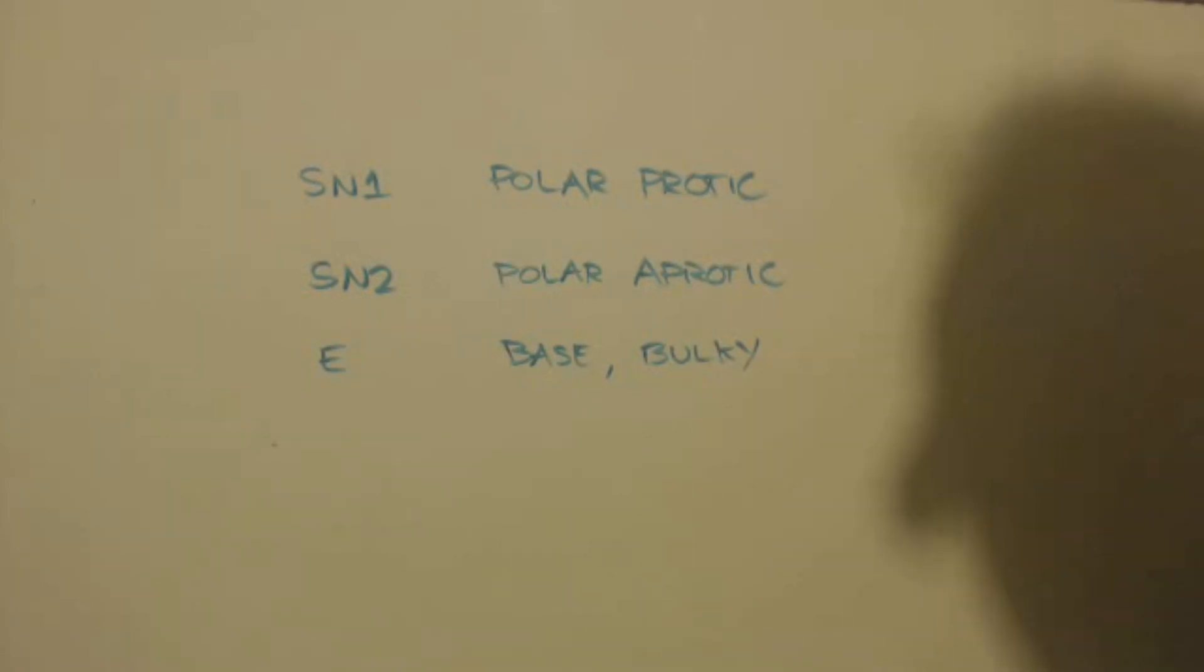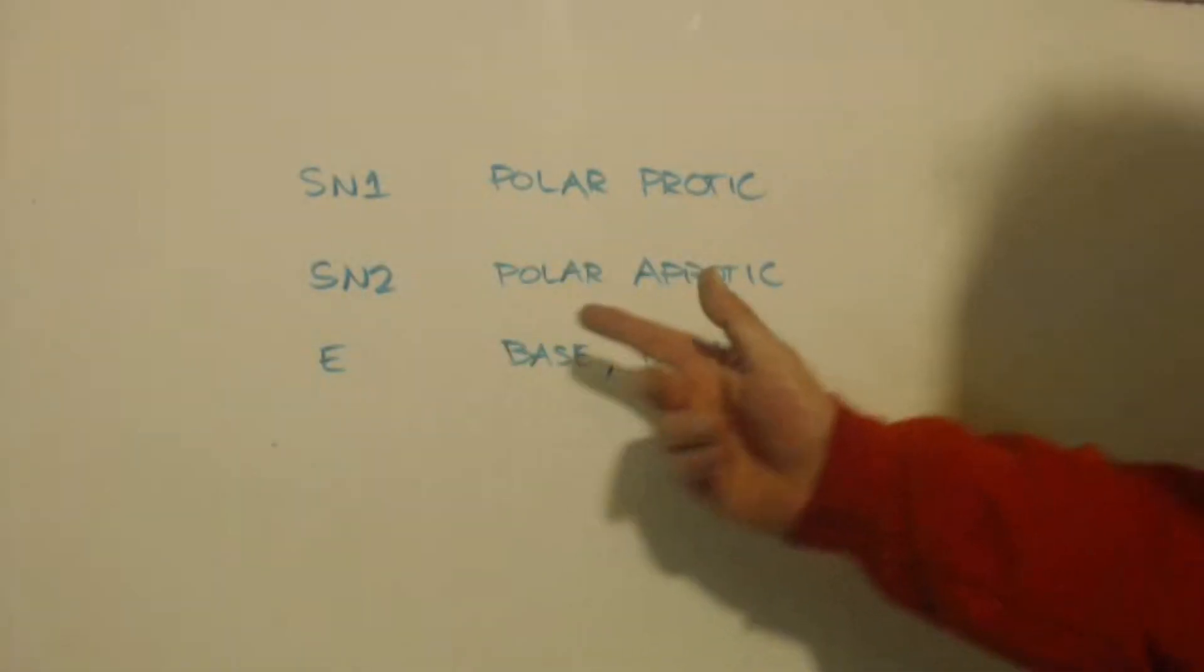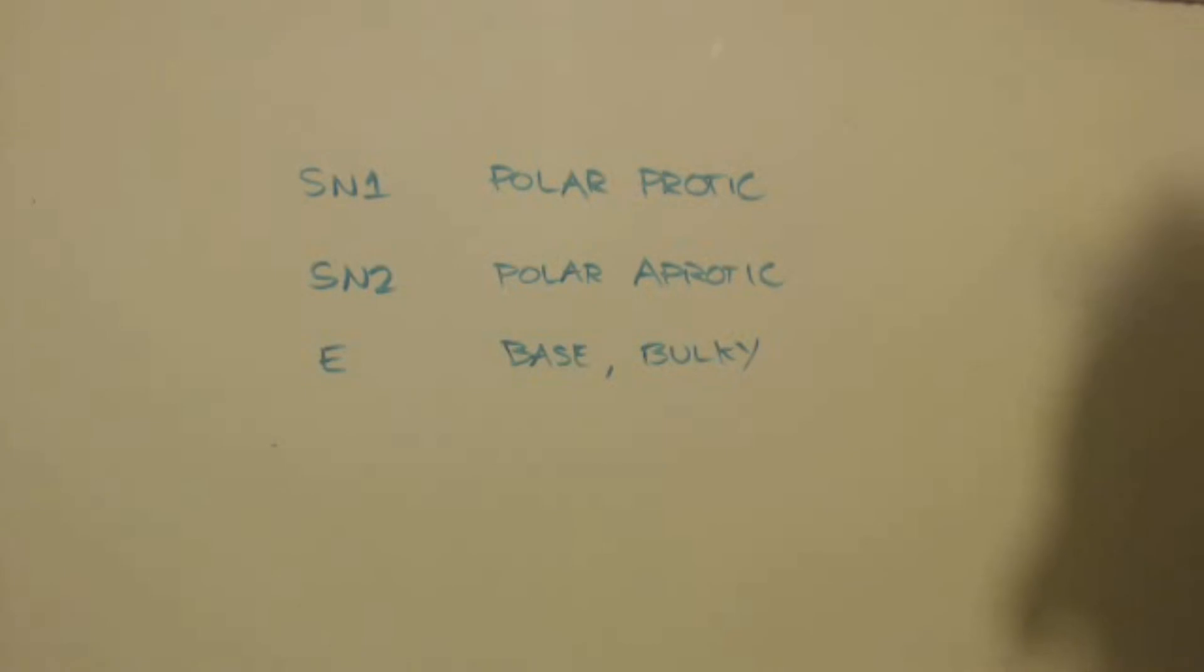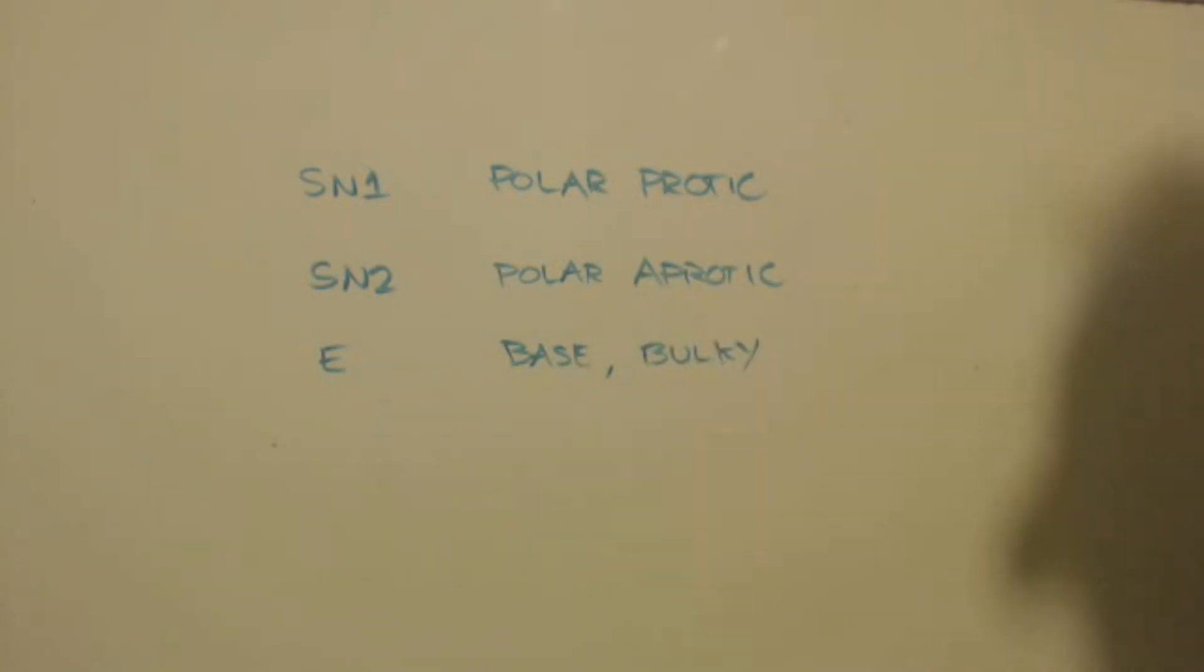SN2, if you don't have those protons, you won't stabilize the carbocation. You'll go directly into an SN2 instead of forming that carbocation. It won't have the ability to stabilize the carbocation with an aprotic polar solvent.